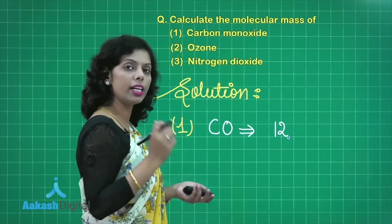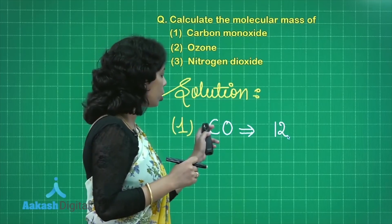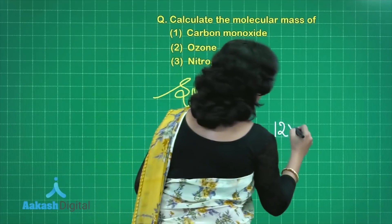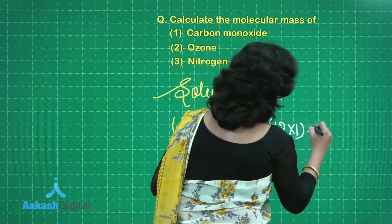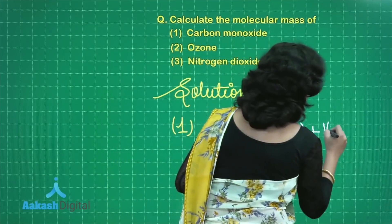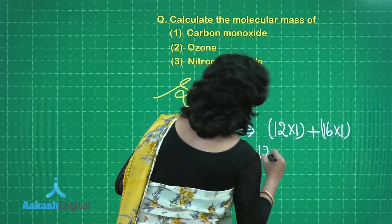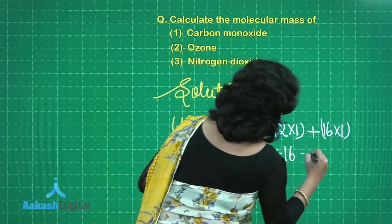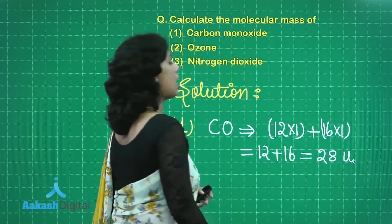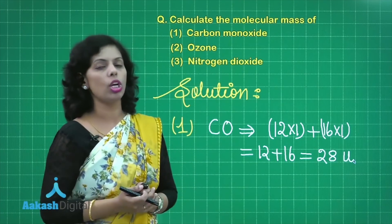So this compound includes carbon and oxygen. Atomic mass of carbon is 12, one atom of carbon is present here. Then oxygen is present, atomic mass of oxygen is 16, quite simple. One atom is present here. This would be 12 plus 16, and if you sum this up you will get 28u as the answer.